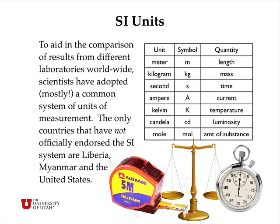Interestingly, the only countries that have not officially endorsed the SI system are Liberia, Myanmar (formerly Burma), and the United States. The basic SI units include length, mass, and time. There's a special unit for current (amperes), for temperature (kelvins — the absolute thermodynamic temperature), for luminosity (the candela), and the mole, which measures the amount of substance in terms of atoms or molecules.